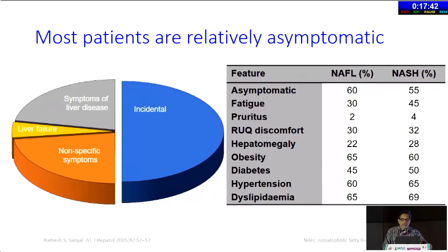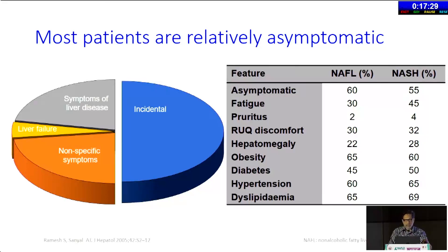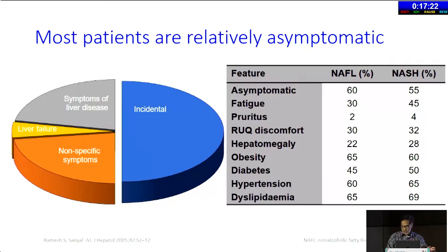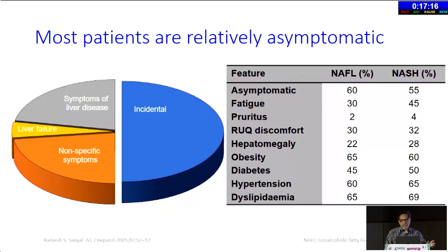Most patients at the time of presentation have fatty liver disease diagnosed as an incidental finding while something else is being evaluated. When symptoms occur, they are frequently nonspecific, and only a minority of people present with symptoms of liver disease. The most common one is right upper quadrant discomfort, which is a very nonspecific symptom. Fatigue is probably the most common symptom that patients will complain of — they just say they have no energy.